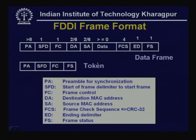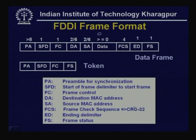The FDDI frame format includes a preamble of minimum 8 bytes, followed by a 1-byte start of frame delimiter, a 1-byte frame control field (performing various control operations similar to 802.5), destination and source addresses (either 2 or 6 bytes each), a data field with no strict maximum size, a 4-byte 32-bit cyclic redundancy code for frame check sequence, a 1-byte ending delimiter, and a frame status field — as already discussed in the context of 802.5.